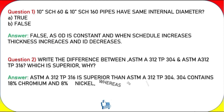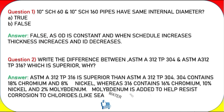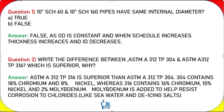Question 2: Write the difference between ASTM A312 TP304 and ASTM A312 TP316 — which is superior and why? Answer: ASTM A312 TP304 contains 18% chromium and 8% nickel, whereas 316 contains 16% chromium, 10% nickel, and 2% molybdenum. Molybdenum is added to help resist corrosion to chlorides like sea water and deicing salts. Therefore, 316 is superior.